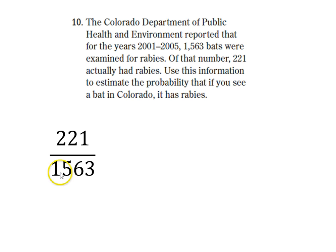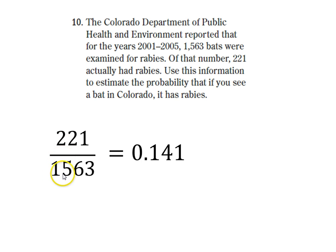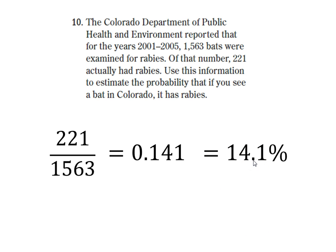221 out of 1,563 bats actually had rabies — this is all the information we have. The percent of these 1,563 bats is found when we do that division: 221 divided by 1,563 is 0.141. That's a decimal, and if we change that to a percent by multiplying by 100, we get 14.1%.